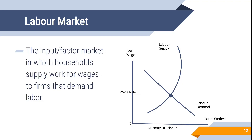At higher wages, a worker offers fewer hours for services — instead preferring leisure activities like going out with family or resting at home. In the labor market, it is the producers and manufacturers who demand labor, hiring their services for production, while labor are the ones offering their hours for work.